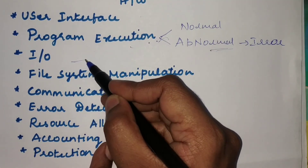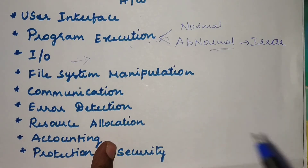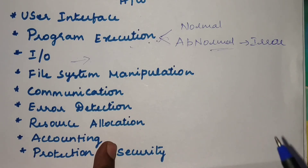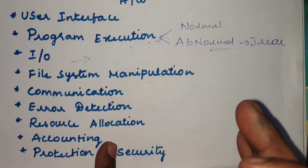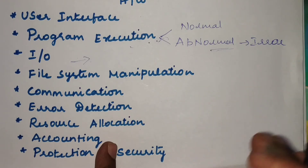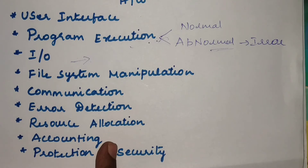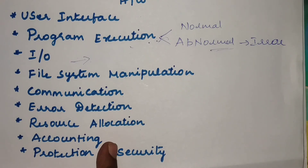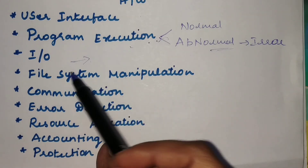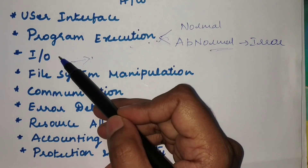The next service is IO operation. If any process is currently being executed by the CPU and it requires IO devices, the CPU will stop its own set of operations and the process will be handed to IO devices to perform the IO operation. Users cannot control the IO devices directly because, in order to provide efficiency as well as protection, these IO devices must be entirely controlled by the operating system.